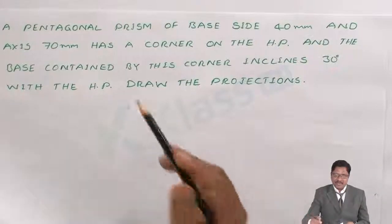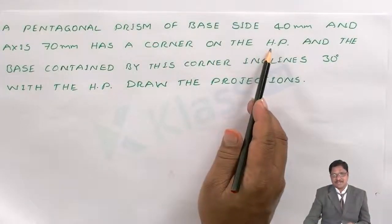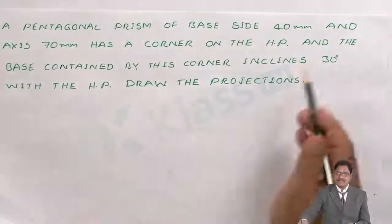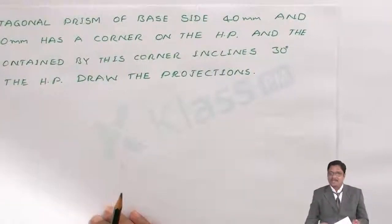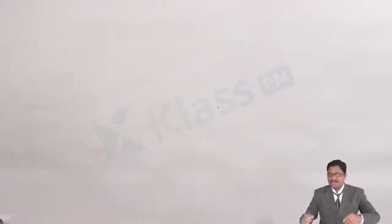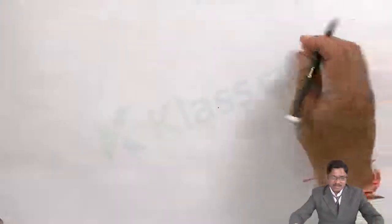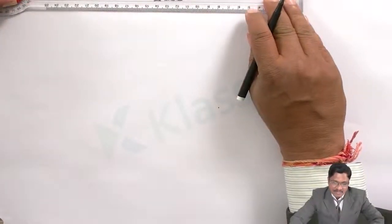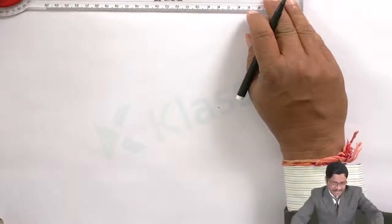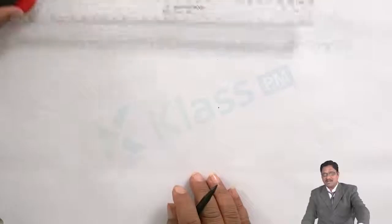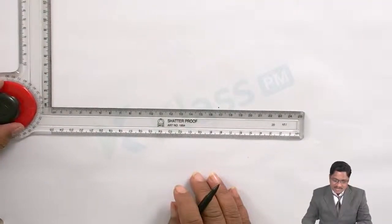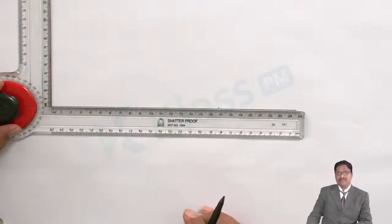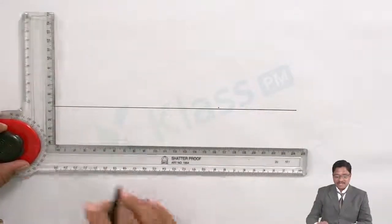Before proceeding, observe the resting condition. Since it is resting on the HP with the corner, the HP projection will be drawn first. Keep in mind the other dimensions: edge of 40mm, height of 70mm, inclination of the base is 30 degrees. Take the mini-drafter and first align the drafter properly with the sheet, because total accuracy depends on the alignment of the drafter only. Each time you have to give the true reference of the sheet and bring the drafter onto your working area. Then draw the standard reference line, which is the XY line or reference line.